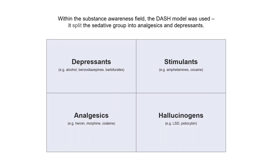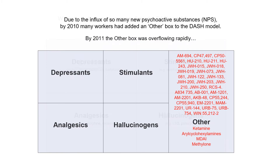Within the substance awareness field, the DASH model emerged, dividing the sedative category into depressants such as benzodiazepines and tranquilizers, and analgesic or painkilling drugs. However, by 2010 there was an influx of many new psychoactive substances, and many of us working in training and education added a miscellaneous or 'other' category to allow for these new drugs.